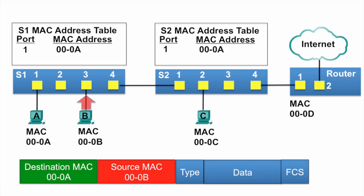S1 notices that the source MAC address is not in its MAC address table, so it adds the MAC address and the incoming port number. Next, switch S1 examines the destination MAC address and notices that MAC address is already in its MAC address table, so it sends it out just port 1.